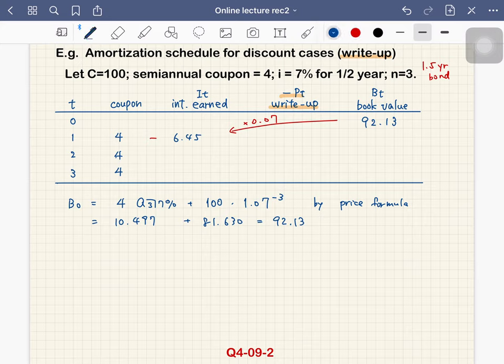So we write negative of this value, that is 2.45. So we do not subtract, but add this 2.45 to this book value. So we get 94.58. So this is called write-up, write-up of 2.45 dollars.